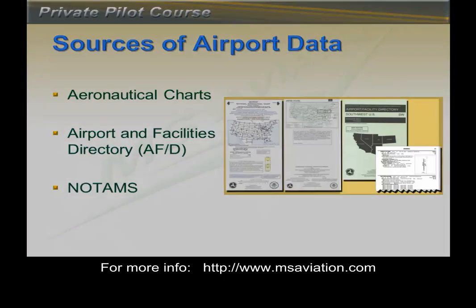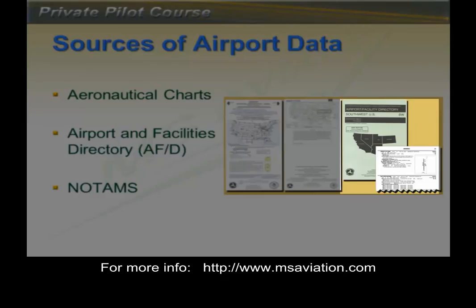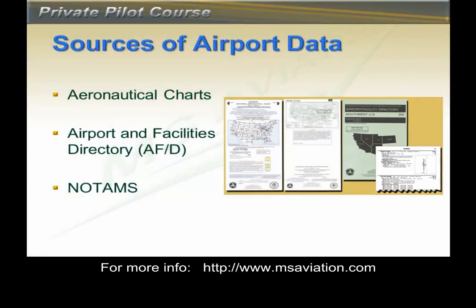Another source of information is the Airport and Facilities Directory, or AFD. In this book you'll find information in more detail about the airport. In many cases you will also find an airport diagram with the locations of taxiways, runways, buildings, and other information. There will be more information on the AFD when we look at cross-country flight planning. Lastly, we can look at NOTAMs. Putting these sources of airport data together gives pilots some of the necessary tools for successful pre-flight planning.